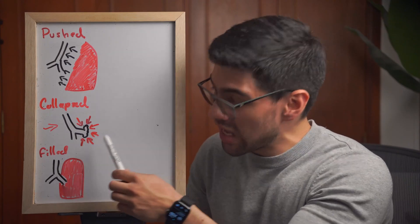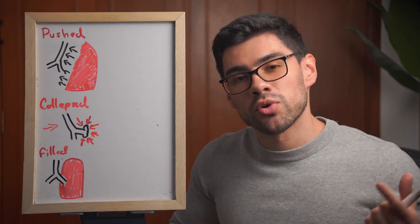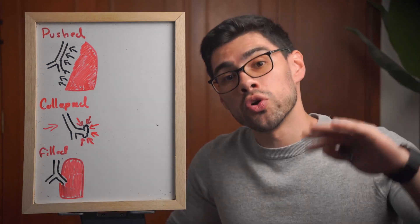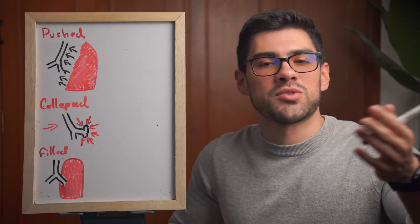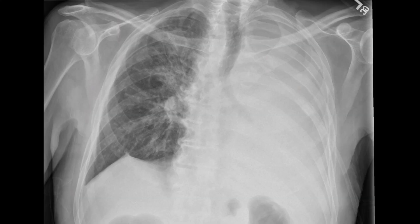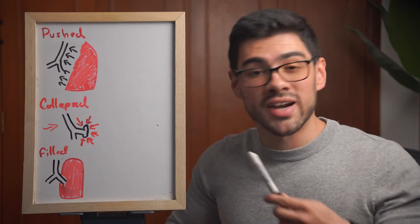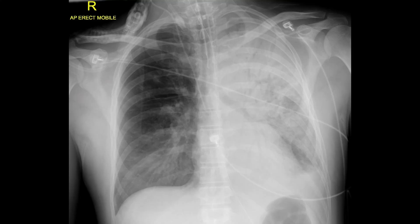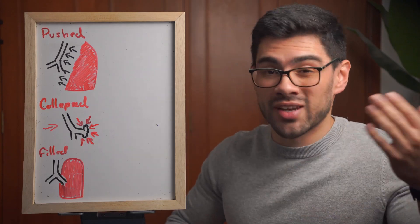When the alveoli are collapsing or absent, the tracheobronchial tree will collapse towards the white lung — it's like collapsing a balloon: the walls come closer together. You would see a white lung and the tracheobronchial tree deviated towards that white lung. Finally, when the alveoli are just getting filled, the tracheobronchial tree stays centered, because there is nothing pushing or pulling — just filling the structures with something other than air.